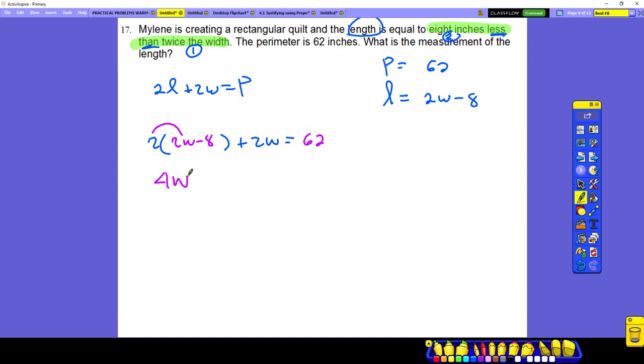Because L is the one that's given in here. My L is two W minus eight. And I will now replace my P also by 62. Okay. After this, we will distribute. Be careful. Don't just write four W minus eight. It will be wrong.